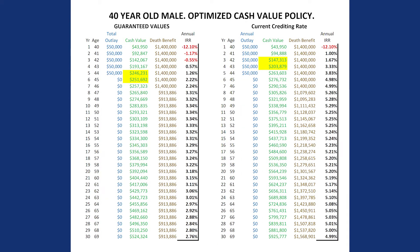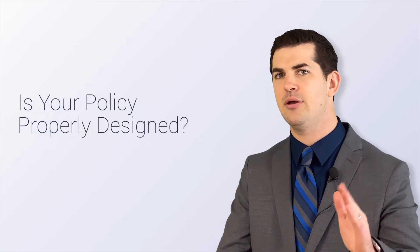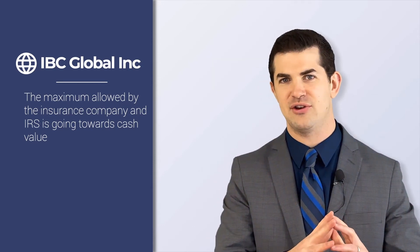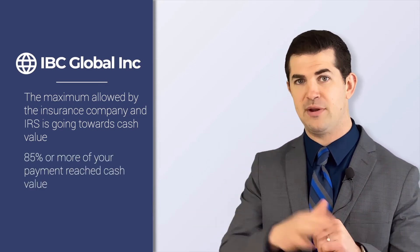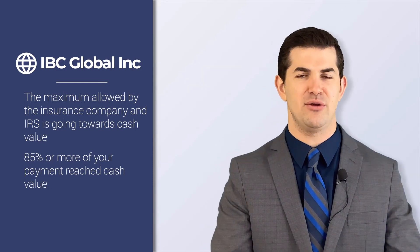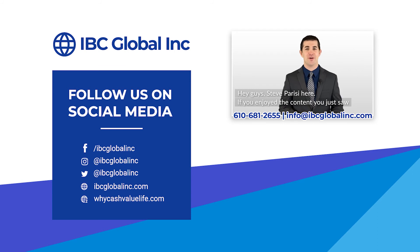The main point: you pay money into the policy, and the more cash you have up front validates that it's properly designed — assuming your goal is building and accumulating cash value. You'll have cash up front and more cash value long term, money you have access to. Overall, we want to make sure the maximum allowable by the insurance company and the IRS is going towards cash value. A quick identifying factor: if you see 85% or more of your payment going to cash value in the first year, it's set up properly — and you're copying what a lot of corporations do when they implement cash value life insurance.